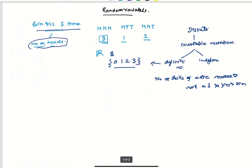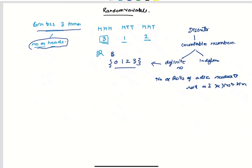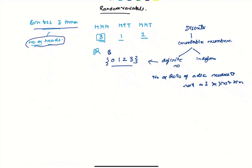The second type is a continuous random variable, where the value can be anything within an interval. For example, the velocity of the next pitch in major league baseball can be any value — anything in between is possible. Every random variable has something we call a probability distribution.